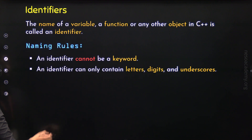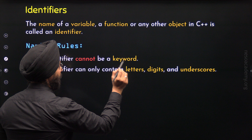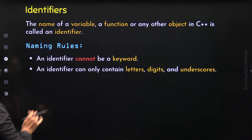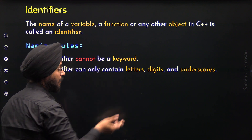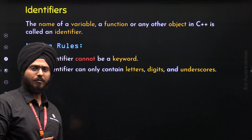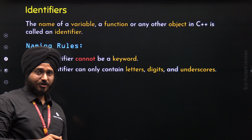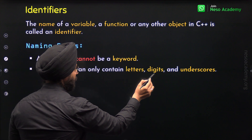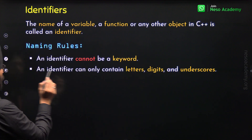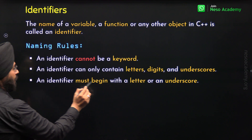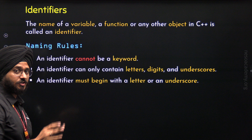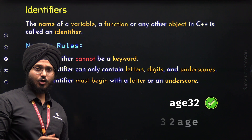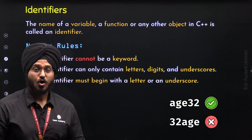Rule number 2 is: an Identifier can only contain Letters, Digits, and Underscores. It is important to understand that an Identifier cannot have any special character like at-the-rate, exclamation mark, or any other operator. We cannot use these special symbols. We can only use Letters, Digits, and Underscores.